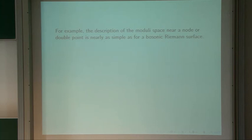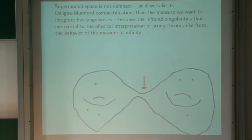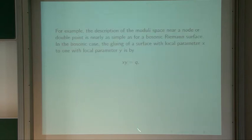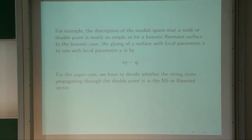Things are almost as simple for super-Riemann surfaces, except that there are two types of degeneration because the string state propagating through the double point could be in either the Neveu-Schwarz or Ramond sector. Either way there's a formula almost as simple as the bosonic one. In the Neveu-Schwarz sector, you have superconformal coordinates x, theta on one side and y, psi on the other side. The analog of XY = Q is an equation that describes the gluing of (x, theta) to (y, psi). An important fact is that in both cases there's only one bosonic parameter epsilon and no fermionic ones, just as for bosonic Riemann surfaces.